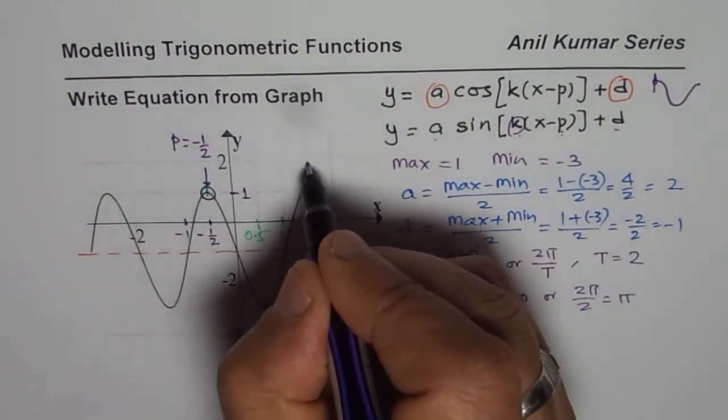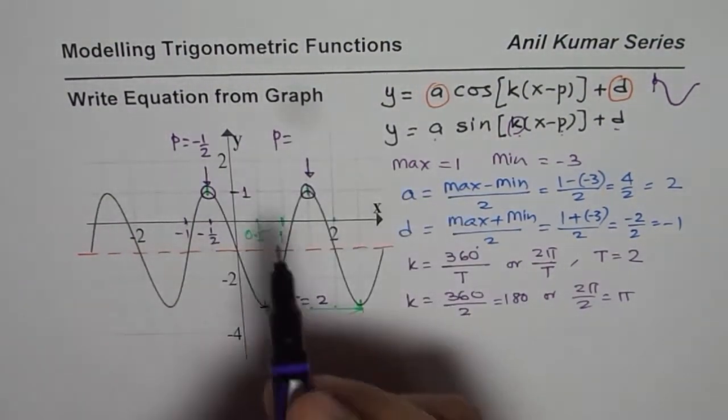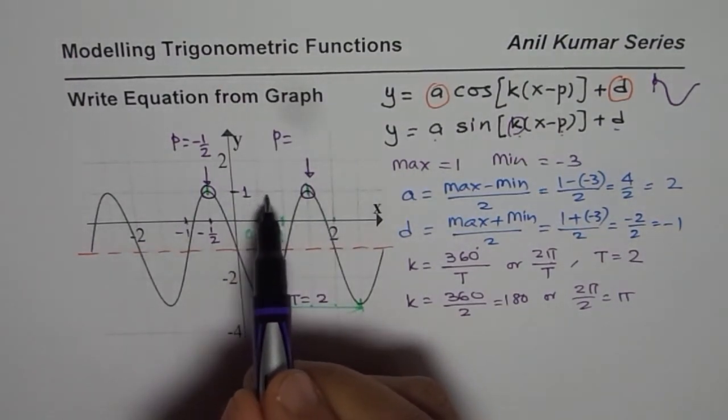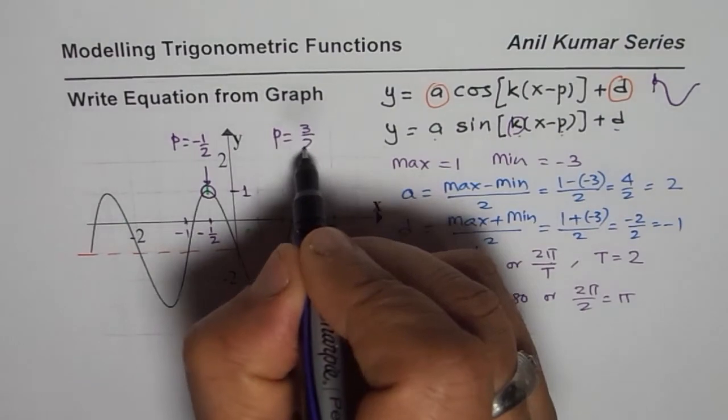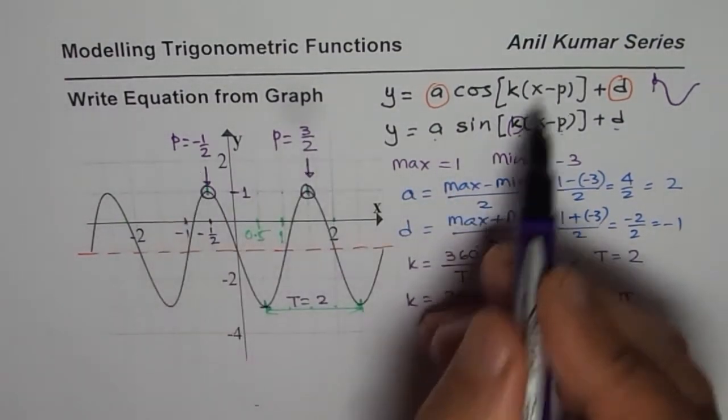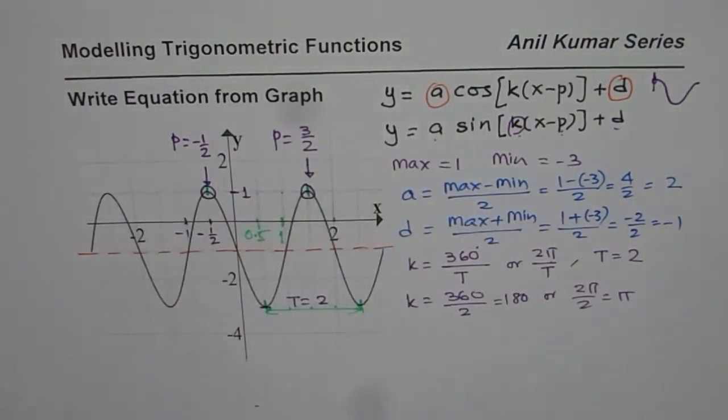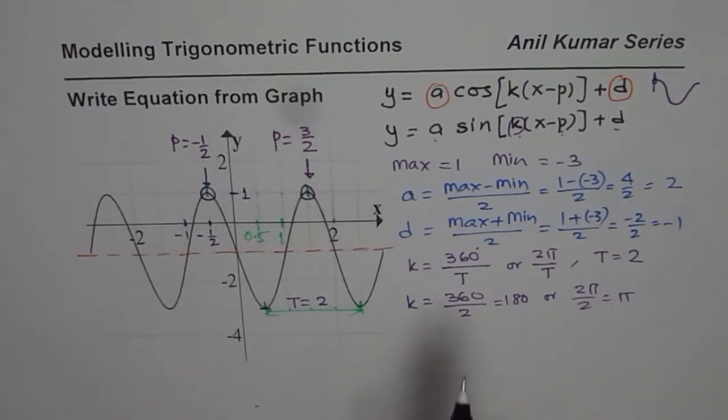If you consider this point then P is equal to how many divisions? Let us count. 1, 1 half, 2 half, 3 half. It is 3 over 2. So both values will give you 2 different equations in cosine and both are correct. You get the idea. So at times you can actually write 4 equations and that is important for you to understand.